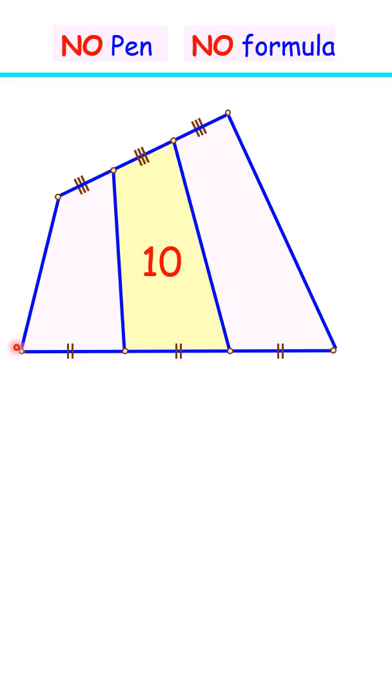Can you find the area of this full quadrilateral where the opposite sides are getting trisected and the area of this yellow region is 10 cm square, and that too without using any pen or any formula?